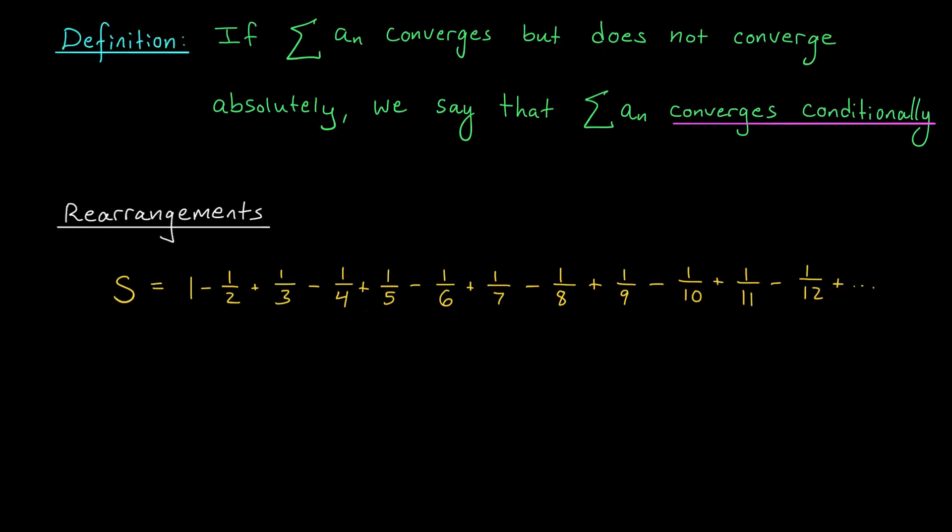We can break up the convergence of an infinite series into a few possibilities: either the series diverges, or it converges absolutely, or it converges but not absolutely. In that last case, we introduce some new terminology — we say that the series converges conditionally. The big difference between conditional and absolute convergence shows up when we talk about rearrangements.